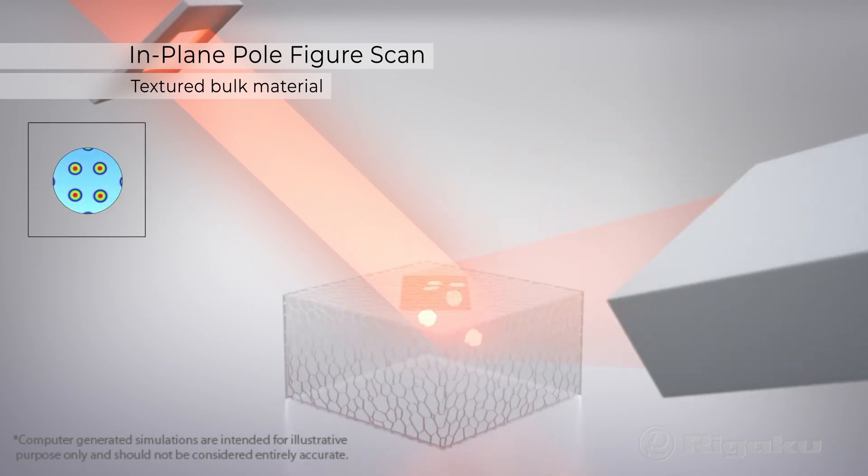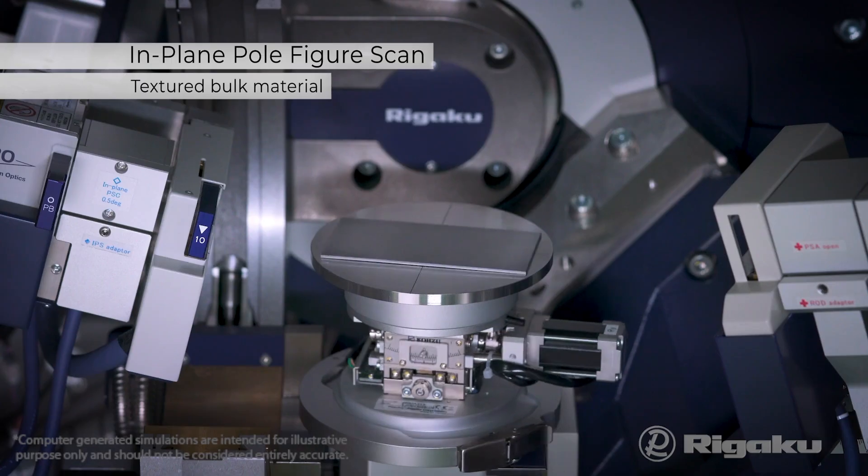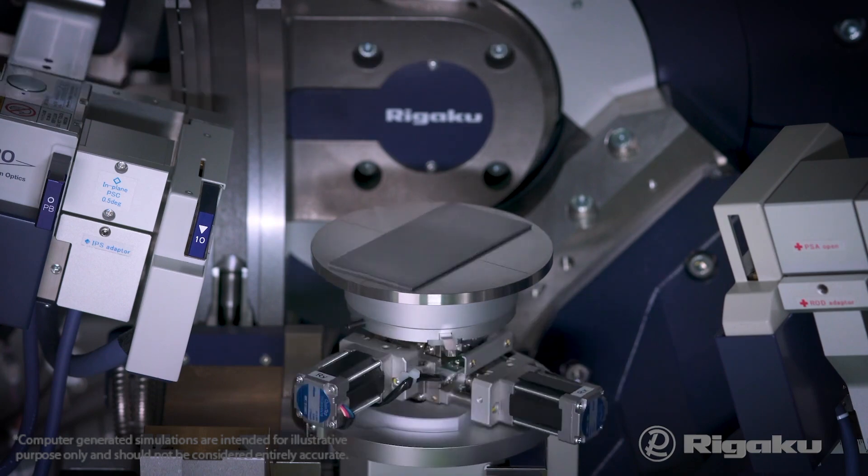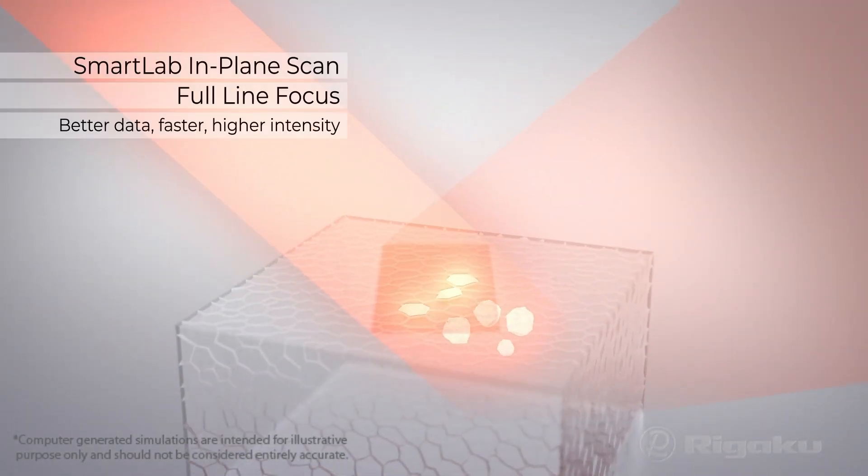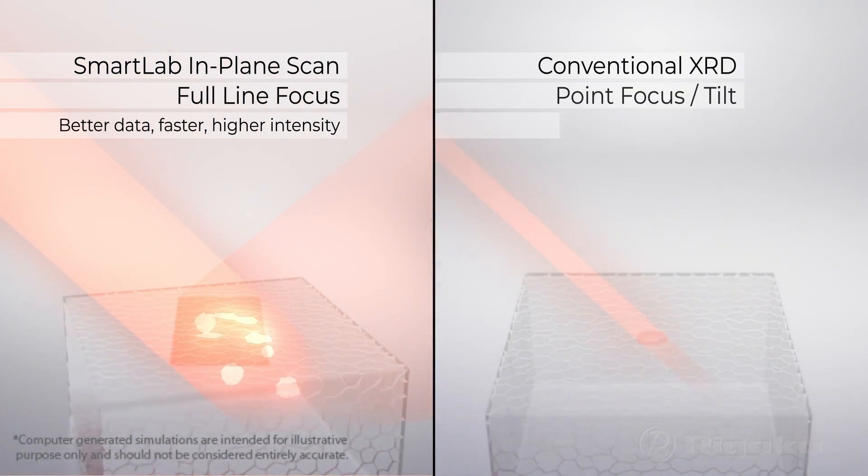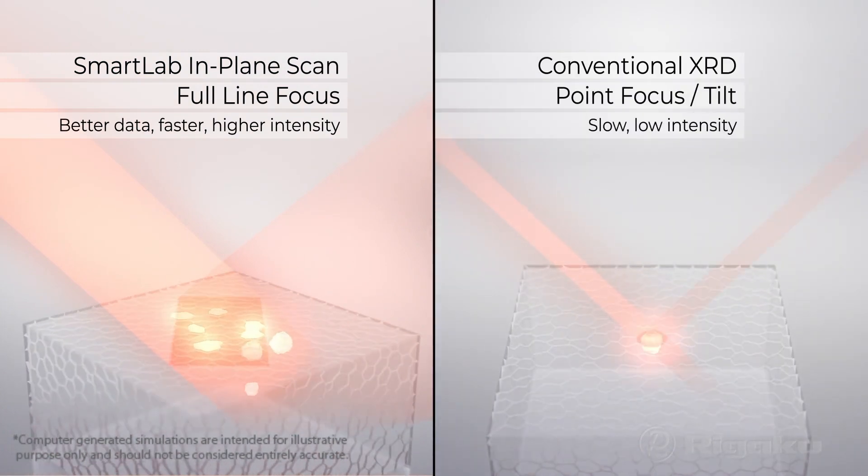The sample always remains in a horizontal position. This also allows use of the full-line focus beam, dramatically reducing measurement time. No need to convert to point focus before scanning.